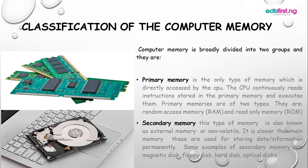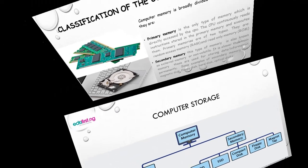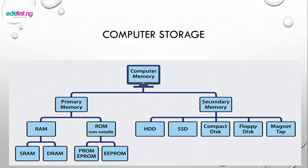Now let's look at the secondary memory. The secondary memory is also called external memory or non-volatile memory. It is slower than the main memory, that is the primary memory. Secondary memory is used to store data and information permanently. Some examples of secondary memory are: magnetic memory, floppy disk, hard disk, and optical disk.